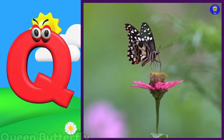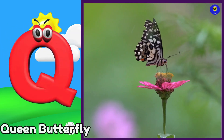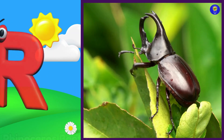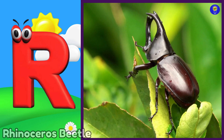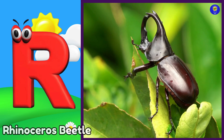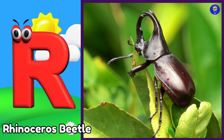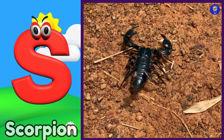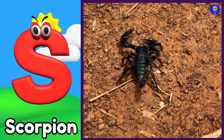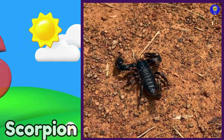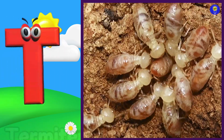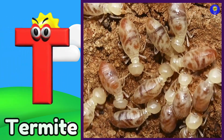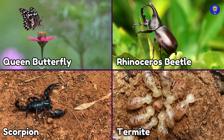Q is for queen butterfly. Q, qu, queen butterfly. R is for rhinoceros beetle. R, r, rhinoceros beetle. S is for scorpion. S, s, scorpion. T is for termite. T, t, termite.